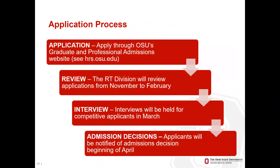To apply, fill out the application on OSU's Graduate and Professional Admissions website at hrs.osu.edu. You'll be uploading all information — reference letters, undergraduate requirements, and personal statements — as well as the NBRC letter. The application process opens November 1st, and we typically review until February 1st. All applicants considered competitive will be asked for an interview starting in March, and admission decisions for all candidates will be notified beginning of April.